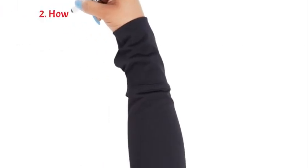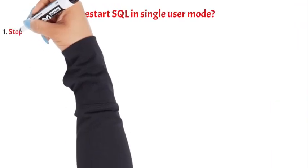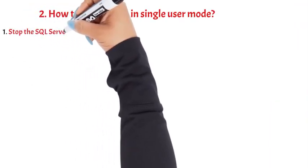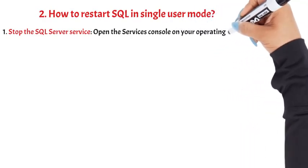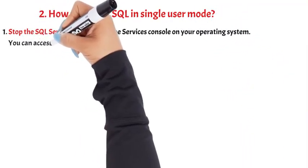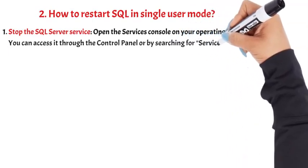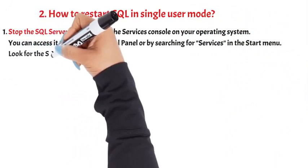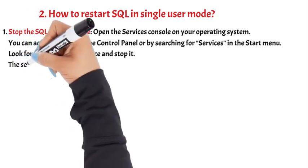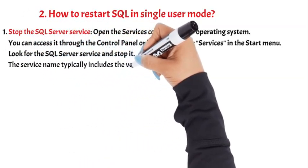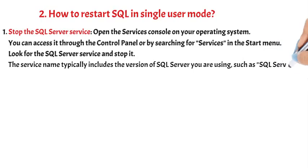Question 2: How to Restart SQL in Single User Mode. Step 1: Stop the SQL Server Service. Open the Services console on your operating system. You can access it through the Control Panel or by searching for Services in the Start menu. Look for the SQL Server service and stop it. The service name typically includes the version of SQL Server you are using.